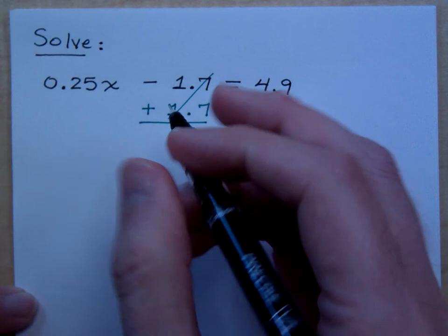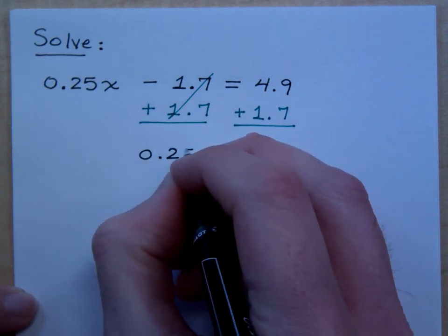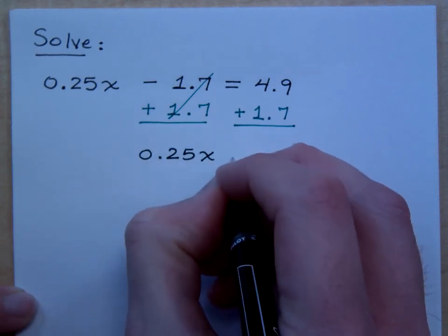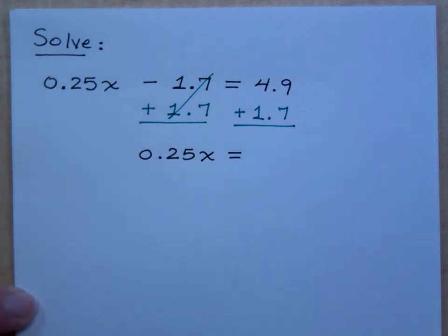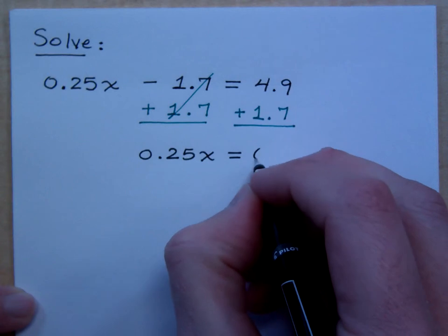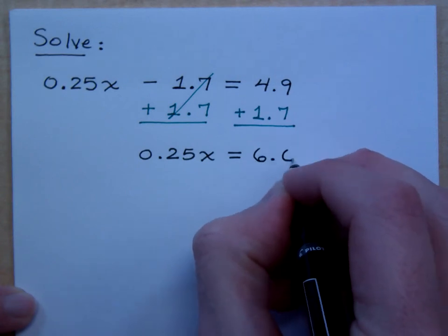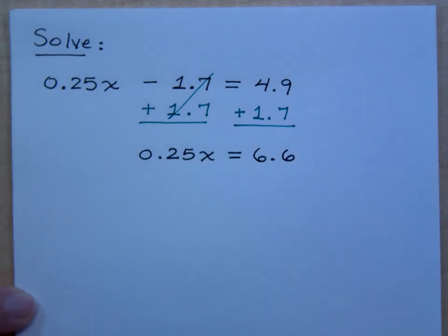So now my equation, I have 0.25x equals what's on the other side? See, this is an exercise of adding decimals, so we get 6.6. And then what do you do to solve this?